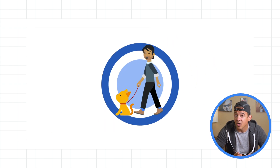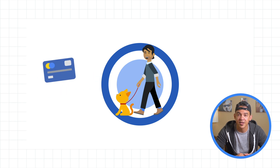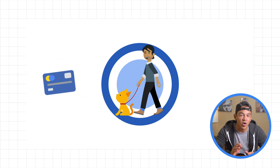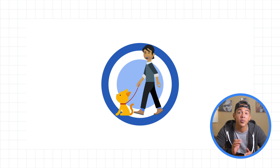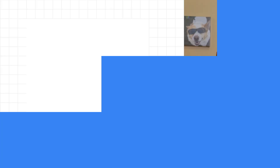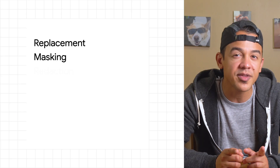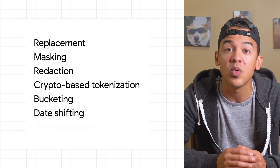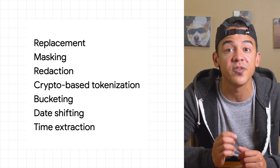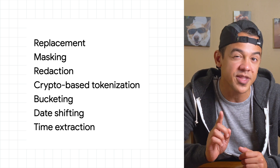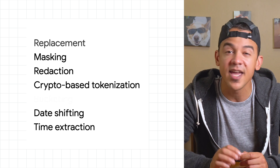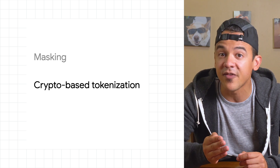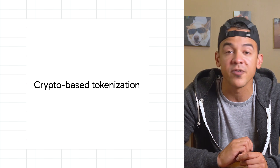Their billing department, on the other hand, handles tons of credit card numbers. They need to protect that information but also access those values to process payments for their premium catwalking service. While Cloud DLP offers a bunch of options to help you hide and remove sensitive values in your data, there's one technique that leverages encryption to de-identify and, in some cases, re-identify those sensitive values.